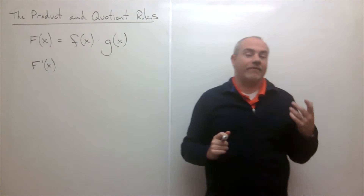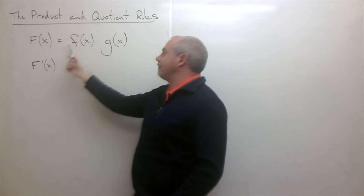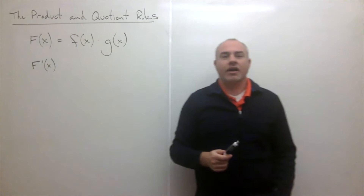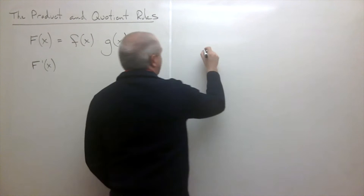The sum rule tells us that if I have f of X plus g of X, then the derivative is f prime of X plus g prime of X. So we might think the same applies here — that the derivative of capital F is just the derivative of f times the derivative of g. But that's wrong. You can't just take the derivative of each one separately.